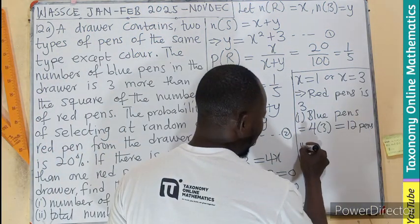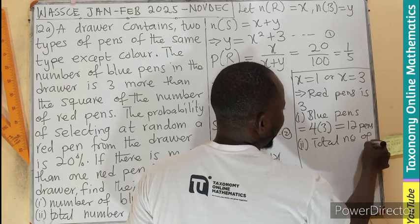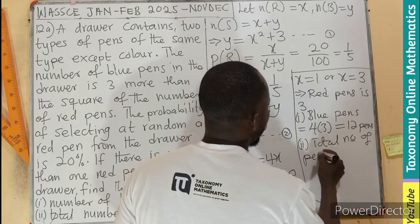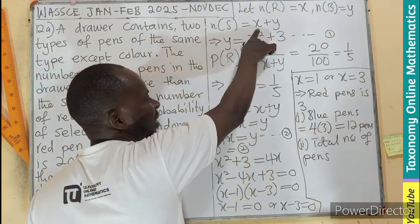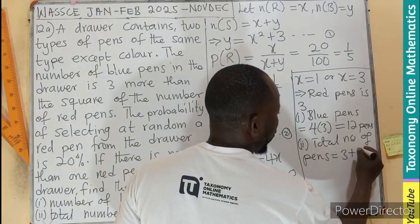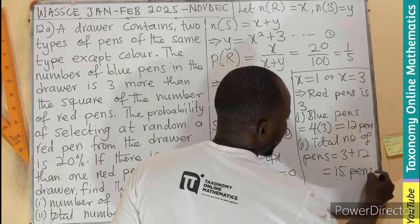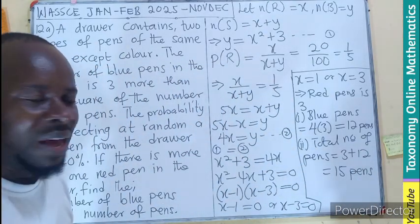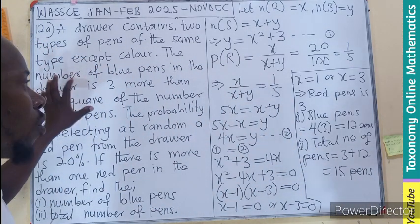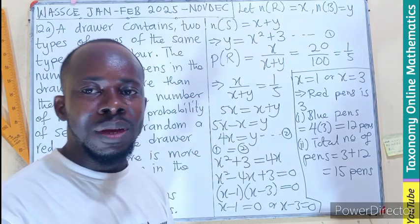Then the final one is to find total number of pens. Total number of pens is X plus Y. And X is 3, Y is 12. That gives us 15 pens. So there are 15 pens in the drawer where 3 is red and 12 is going to be blue.